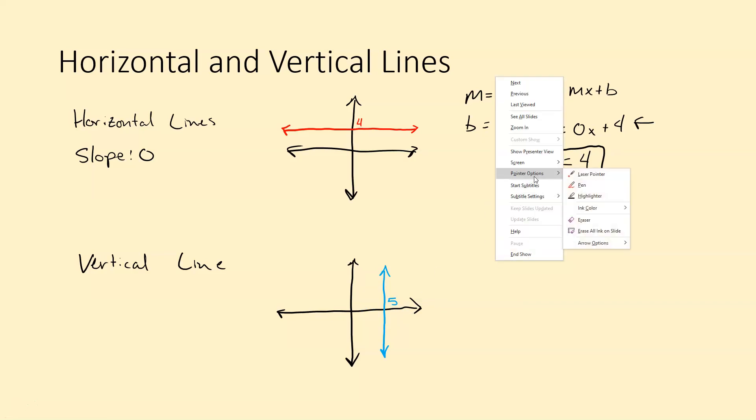The difference about a vertical line is that it doesn't actually cross the y-axis unless it is literally on top of the y-axis. So in most cases it does not actually cross the y-axis so we don't have a b value, right? And the other thing to note is our slope is undefined.